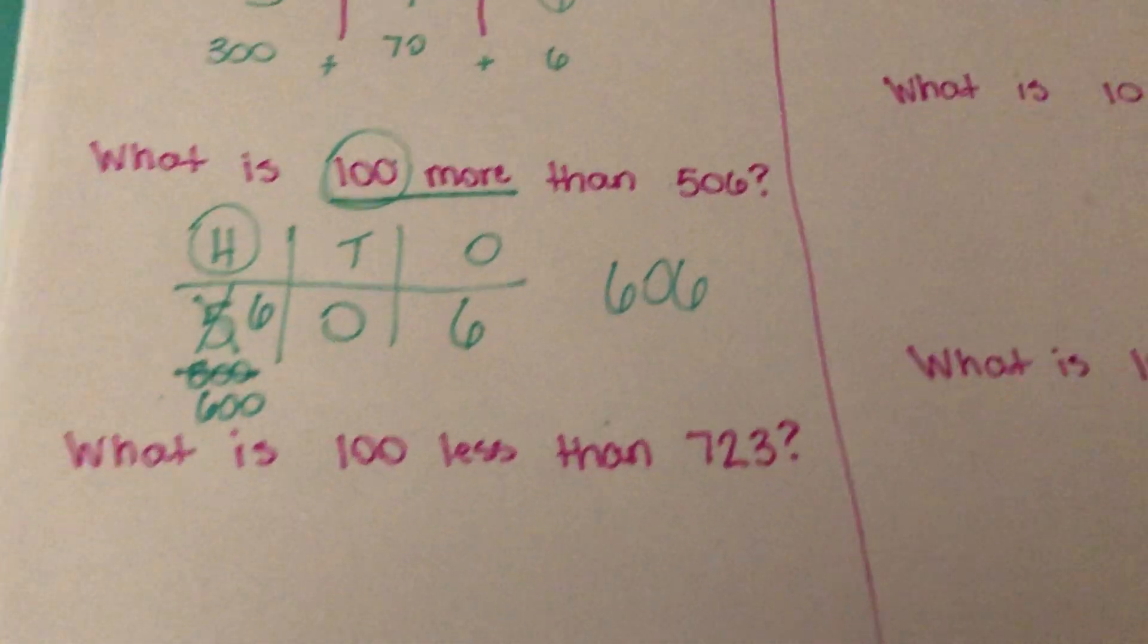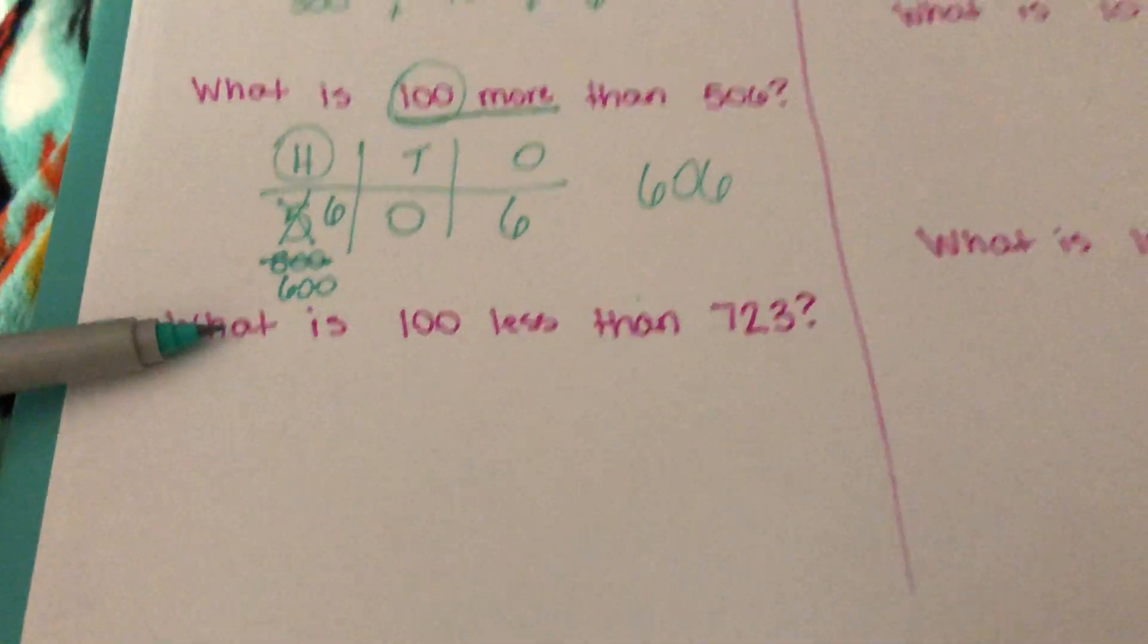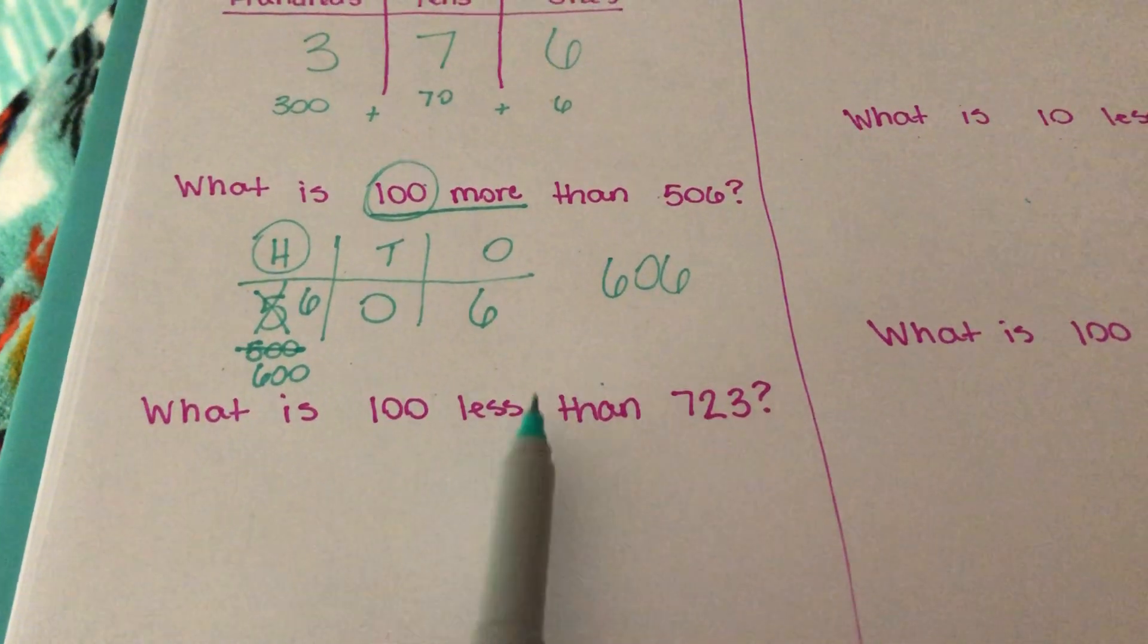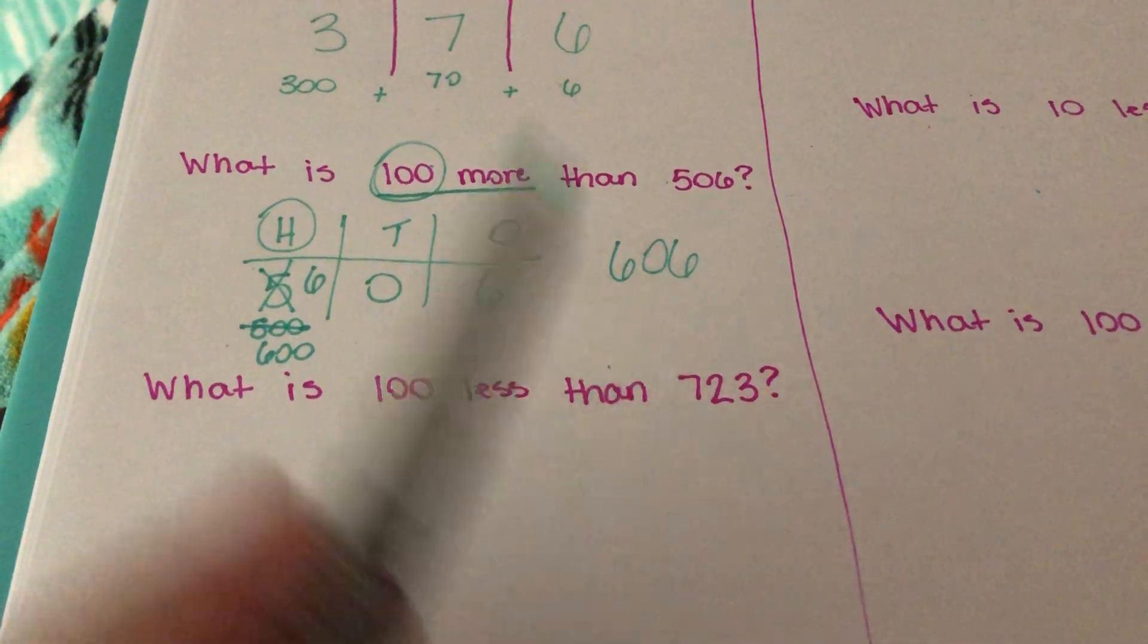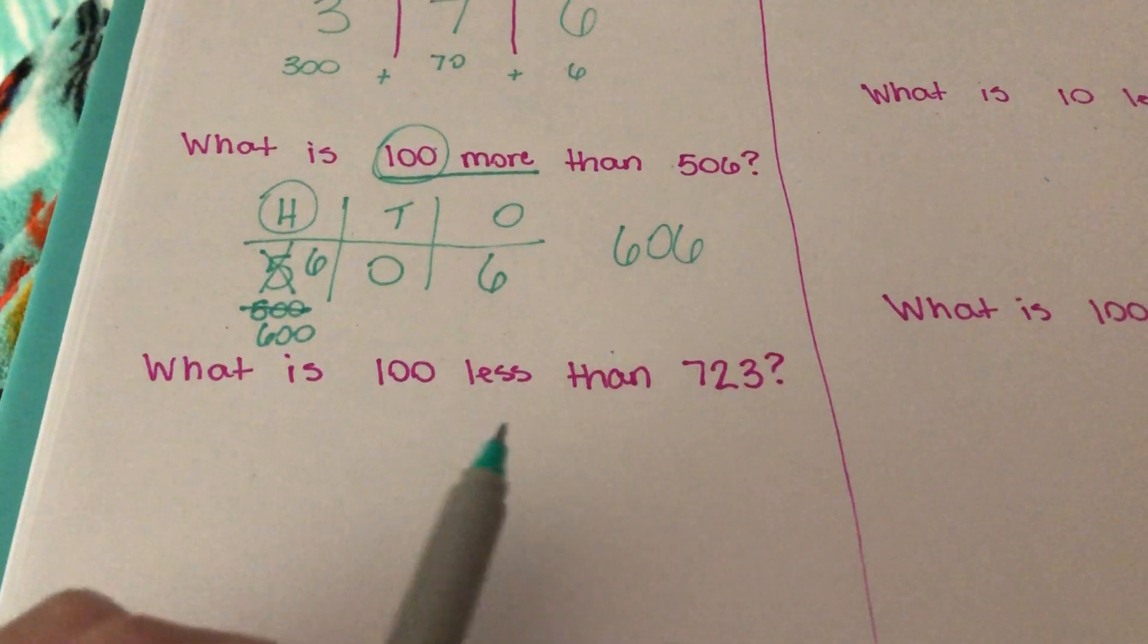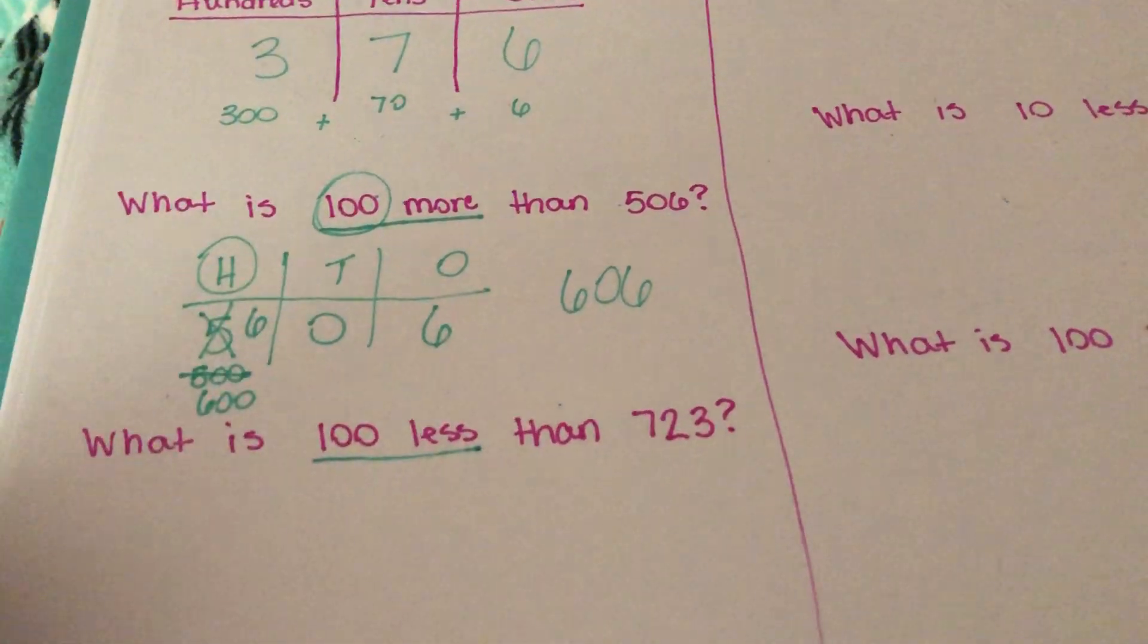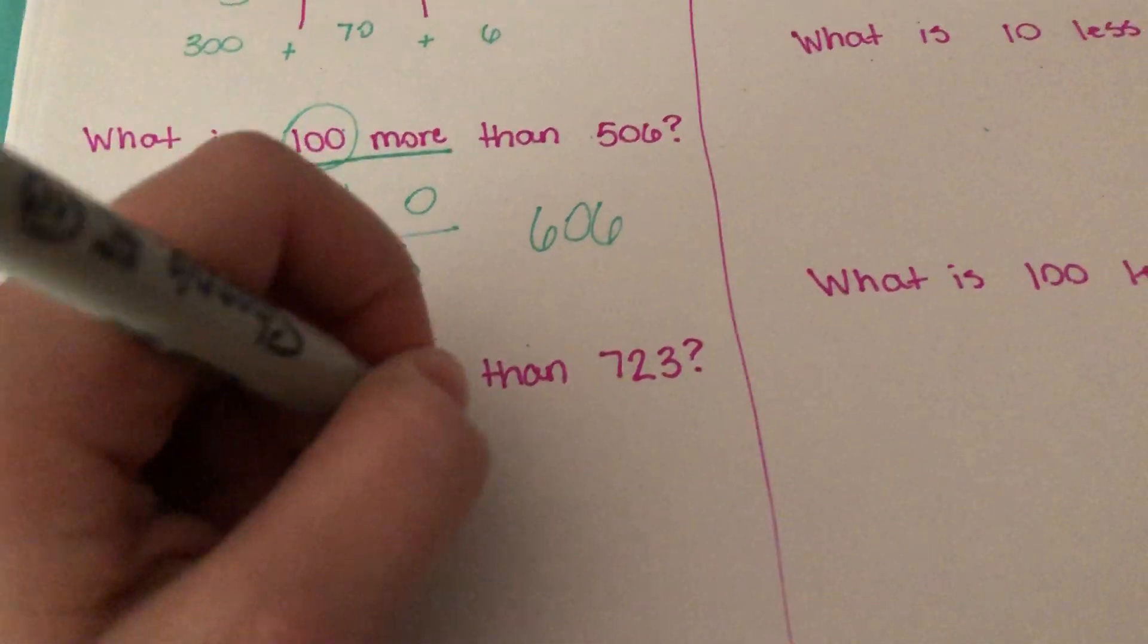So the next thing that we're going to do is we're going to go down and we're going to do another example. The student should be able to read this problem and first identify what they want. This is so important that they do this because so often they see this number and then they don't pay attention to more or less. So what is 100 less than 723? We're looking for 100 less. Step 1, draw your place value chart, H-T-O.